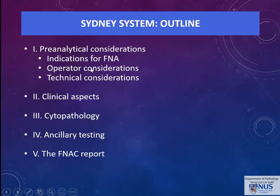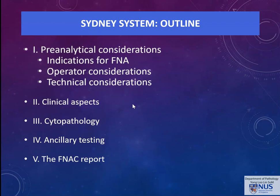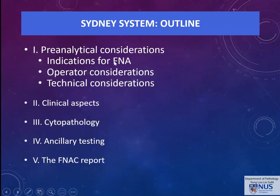We are going to look at five aspects covered in this proposal: pre-analytical considerations, clinical aspects, cytopathology — which describes the five categories — ancillary testing, and the FNAC report. Let's start by looking at the pre-analytical considerations, which include indications for FNAC, so when FNACs should be done versus core biopsies or excision biopsies, who does the FNA, and technical considerations regarding needle size, aspiration technique, and specimen splitting or triage.